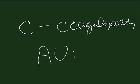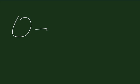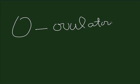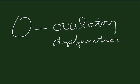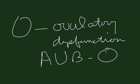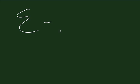AUB-C would refer to coagulopathy as a cause. O refers to ovulatory dysfunction. One of the most common causes of abnormal bleeding is anovulation, so AUB-O refers to dysfunctions of ovulation, most commonly anovulation.